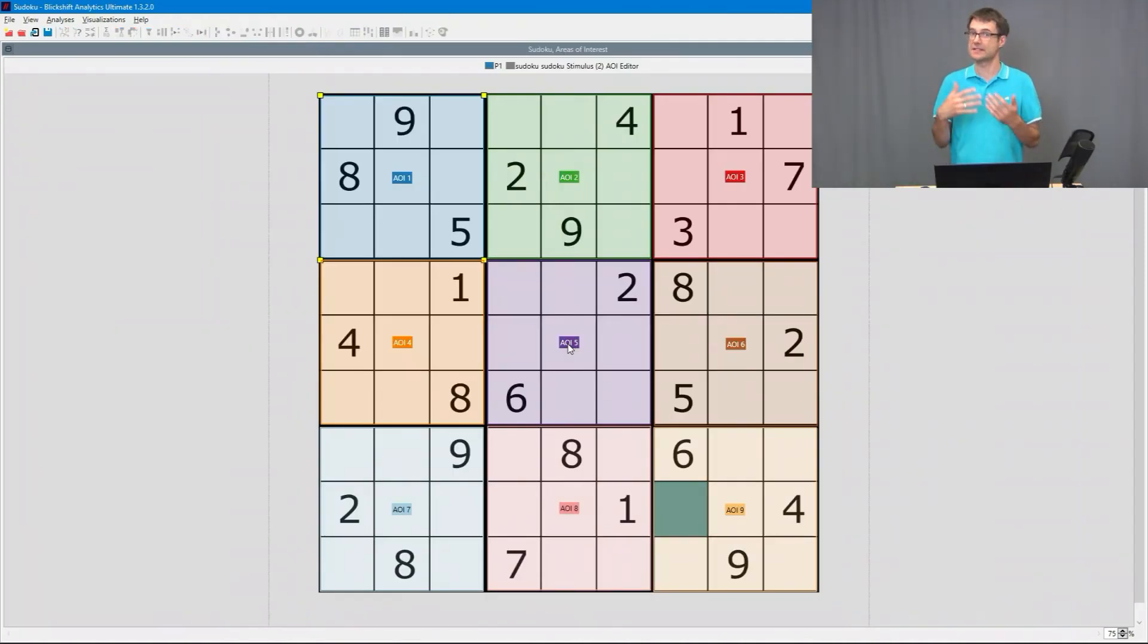Besides gazes, saccades and fixations there are many more eye-tracking metrics. And for example one eye-tracking metric comes from the areas of interest.